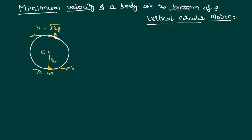Taking point A as the reference point, we apply the law of conservation of energy between points A and B. According to the law of conservation of energy, total energy at point A equals total energy at point B. Total energy means potential energy plus kinetic energy at each point. Since we have taken A as the reference point, potential energy at A equals zero.